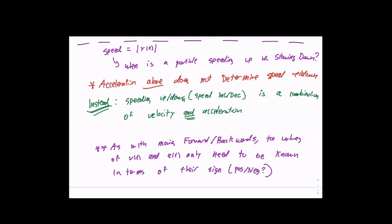You might get a question that asks: at t equals five, what is happening — are we moving forward? Is speed increasing or decreasing? What is the acceleration? Sometimes I ask what happens at a singular point — no sign chart needed. And sometimes we're asked over what intervals this occurs, which means sign charts are required.